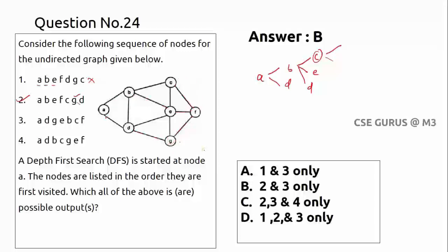Option 3: A→D→G→E→B→C→F. No cycle, all vertices covered — valid DFS. Option 3 is also correct. Option 4: A→D→B→C→G. From C, the edge to G does not exist directly; valid adjacents from C are F or E, not G. So option 4 violates DFS properties. Options 1 and 4 are incorrect; only 2 and 3 are valid. The answer is option B.